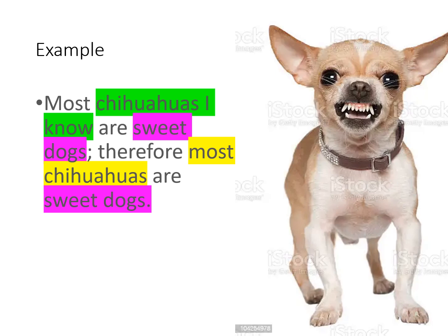The target group is chihuahuas — all the chihuahuas in the world, and there are many, many of them. The sample by which we draw the conclusion is the chihuahuas that I know — maybe you have met 10, 20, maybe 50 chihuahuas. And then the relevant property is 'sweet dogs.' Notice that the target group always repeats in both the premises and the conclusion. What do you think — is this a good argument or a bad argument, and why?